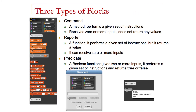We can create our own blocks by going to the variables category, and at the very bottom there's a 'make a block' option. When we click on that, we're presented with a dialog. There are three kinds of blocks we can create: a command block that performs a set of operations and does not return any values but allows for input parameters; a reporter, which also takes input parameters and returns a value of some type; and a predicate, which is like a reporter but always returns a Boolean value of true or false.